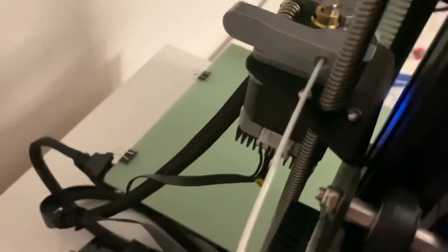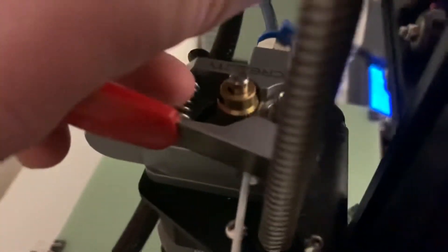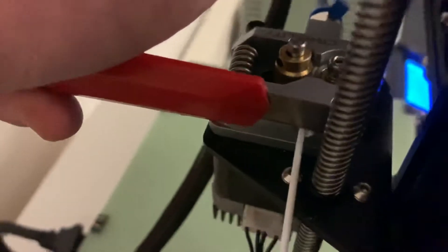Then you're going to insert it into here, and then you're going to make sure that the first marking is right up against this part. Okay, then you're going to extrude 100 millimeters. It's going to extrude, and after you've done that, just before you pull it out, while it's still hot...